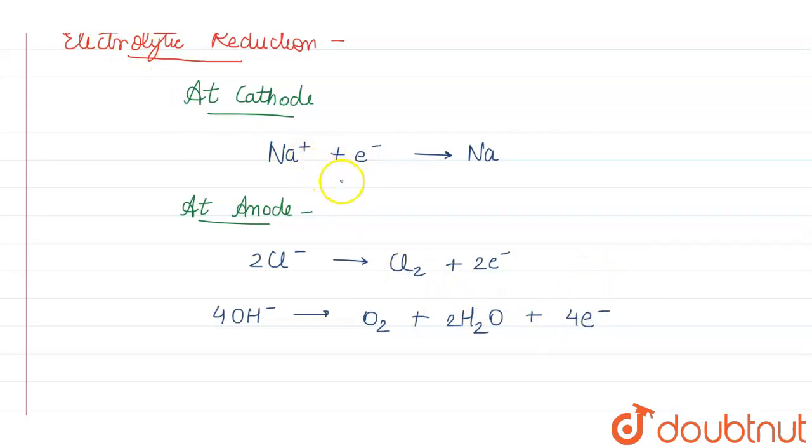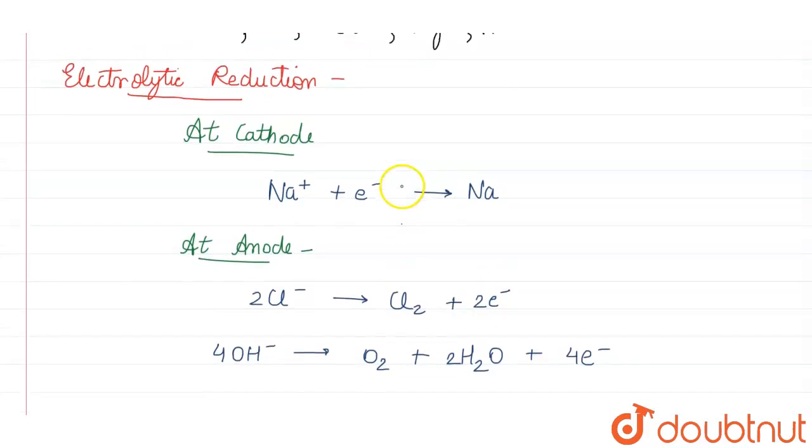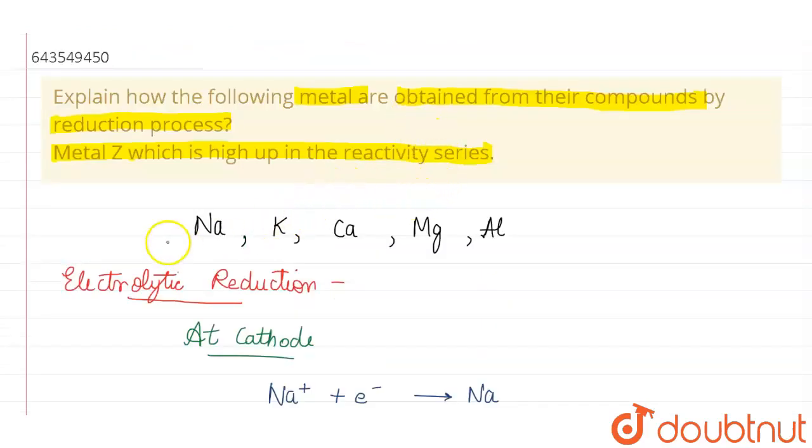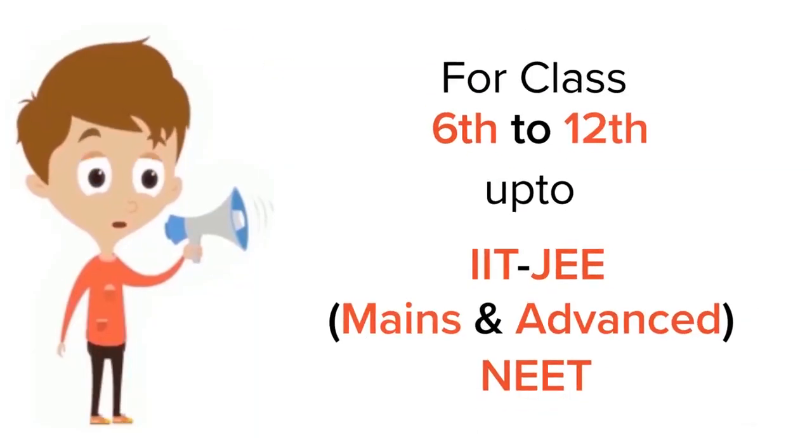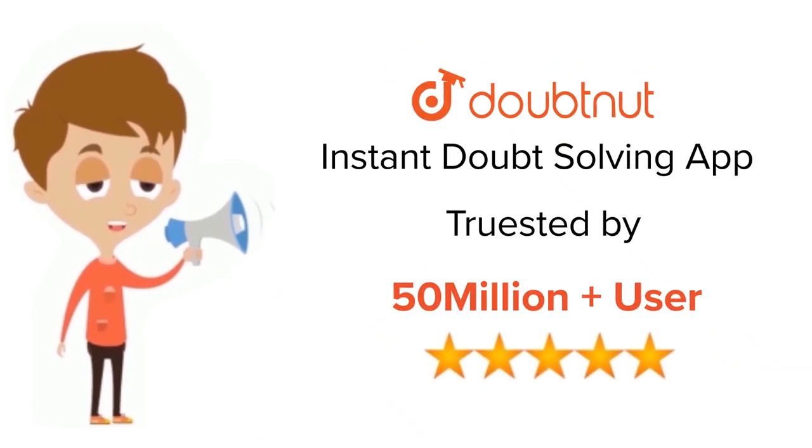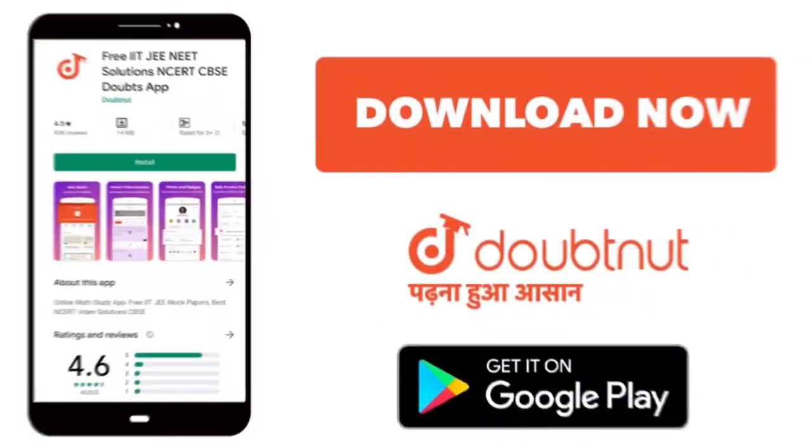The electrolytic reduction of sodium is shown by the following reactions. This is how metals with higher reactivity are reduced from their ores. Thank you for watching. For Class 6 to 12, IIT JEE and NEET Level. Trusted by more than 5 crore students. Download DoubtNet app today.